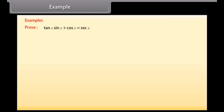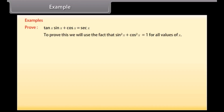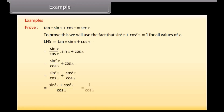Example 1: Let's solve some examples related to trigonometric identities. Prove that tan x · sin x + cos x is equal to sec x. To prove this we use the fact that sin squared x plus cos squared x is equal to 1 for all values of x. Solving the left-hand side, which is tan x · sin x + cos x, we get sec x, which equals the right-hand side. Hence tan x · sin x + cos x is equal to sec x.